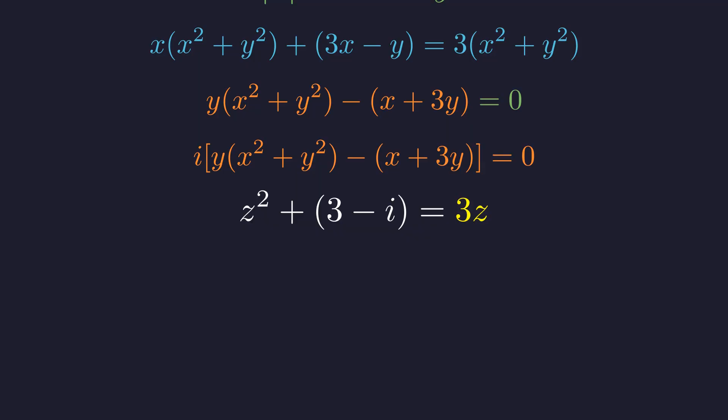Rearranging to standard quadratic form: z squared minus 3z plus the quantity 3 minus i equals zero.